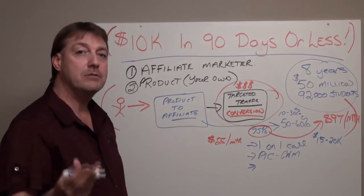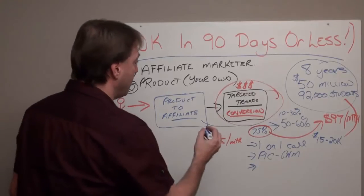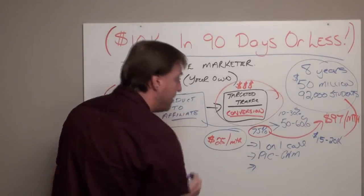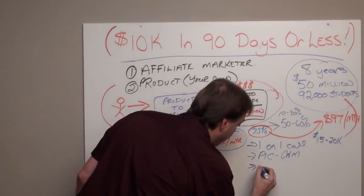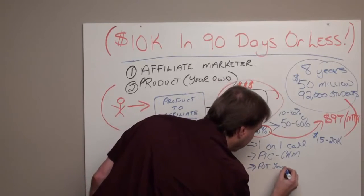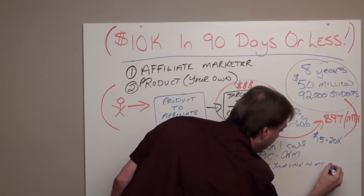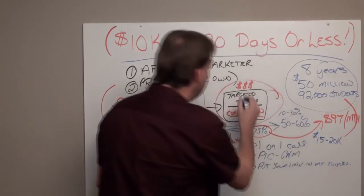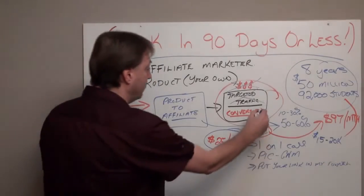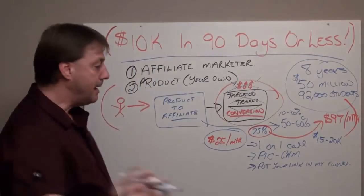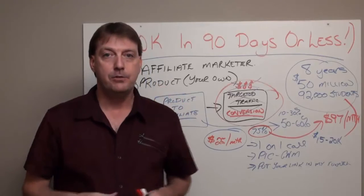I'm out to make at least a thousand success stories over the next 90 days. That's what I'm set out to do. So what I'm going to do is, when you sign up for the $25 a month and get your affiliate link to earn 100% commissions, I'm going to take your affiliate link and put it into my funnel.